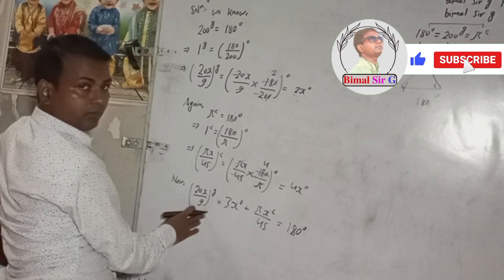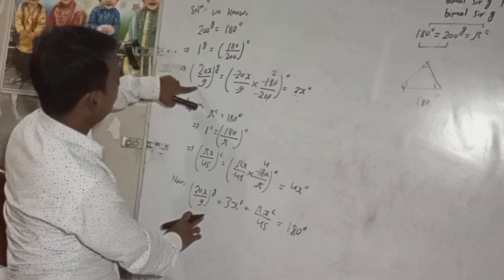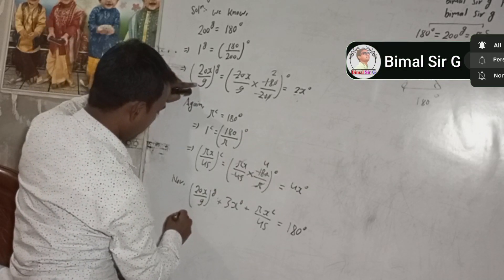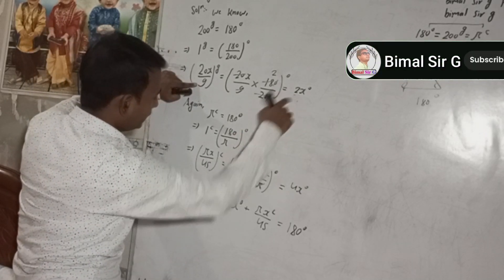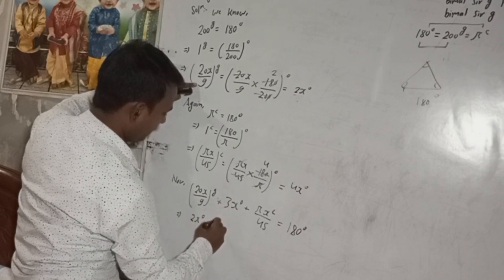180 degree means you have to write this in form of degrees. So 20x/9 grade is equal to 2x degree. So this is 2x degree plus this 3x, and πx/45 radian, so this is 4x degree, is equal to 180 degree.